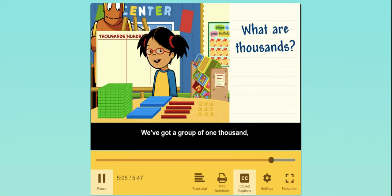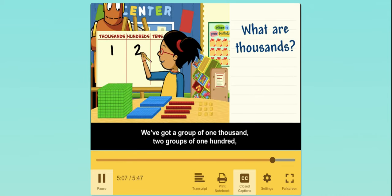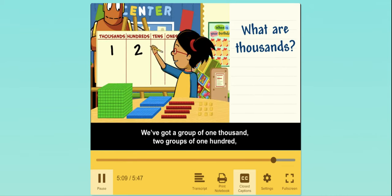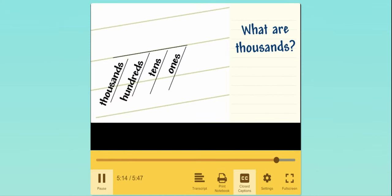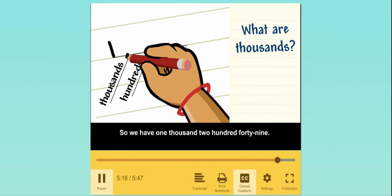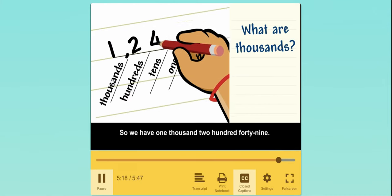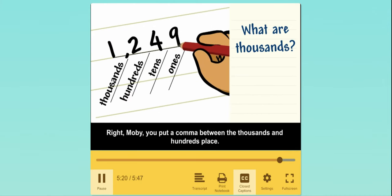We've got a group of 1,000, 2 groups of 100, 4 groups of 10, and we have 9 ones. So we have 1,249. Right, Moby. You put a comma between the thousands and hundreds place.